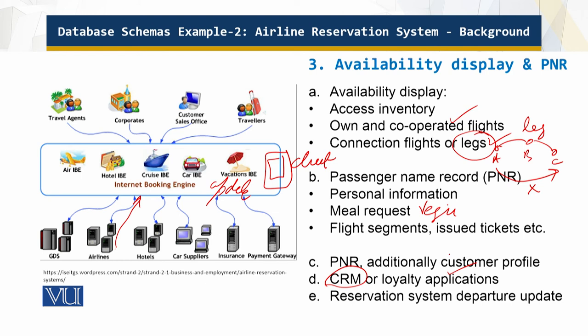Once a flight has departed, the reservation system is updated with the list of checked-in passengers. There are also no-shows — passengers who made a reservation but did not come — and go-shows — passengers who did not make a reservation but came, bought a ticket, and flew.